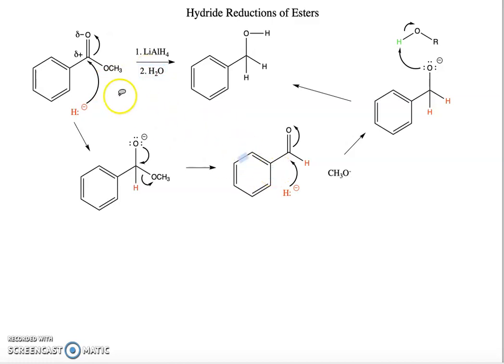The aldehyde is actually more reactive than the ester. So as soon as you make any of this aldehyde, it's going to react right on to the alcohol. So even if you used a limiting amount of lithium aluminum hydride, as soon as any of this aldehyde is made, it's going to react before any of the remaining ester reacts.